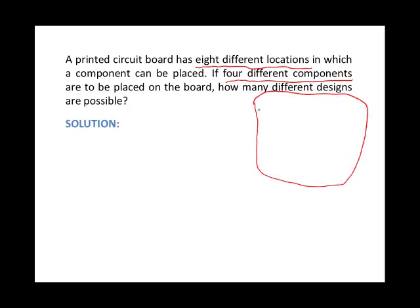Let's just assume this is a circuit board. I've actually worked for a circuit board company so this is kind of interesting to me. There's eight different locations where these components can go. So let's just imagine, here's one location, two, three, four, five, six, seven, eight. And I have four different components so we'll call it component one, component two, component three, and component four.